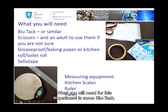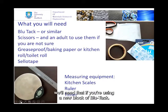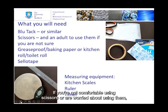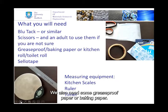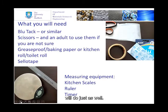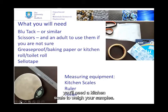What you will need for this experiment is some Blu-Tac. You don't have to have a new piece — you can use Blu-Tac you've got lying around, but there'll be different ways of preparing the sample. You'll need scissors if you're using a new block of Blu-Tac. If you're not comfortable using scissors, please have an adult on standby. We also need some greaseproof paper or baking paper — kitchen roll or toilet roll will do just as well — and sellotape to fix it in place. We're going to measure our results, so we'll need either a ruler or a timer. If you're using old Blu-Tac, you'll need a kitchen scale to prepare your samples.